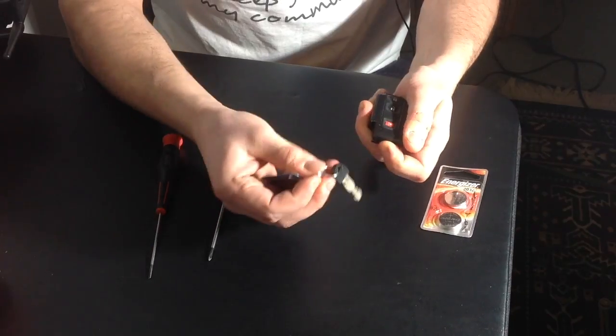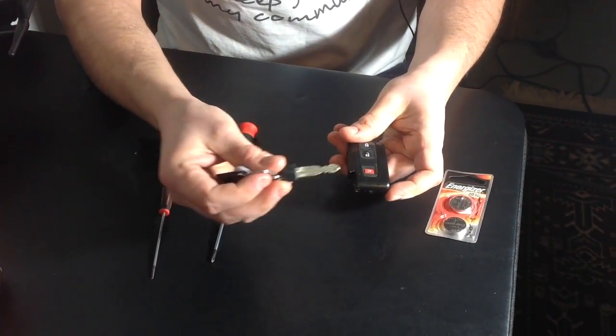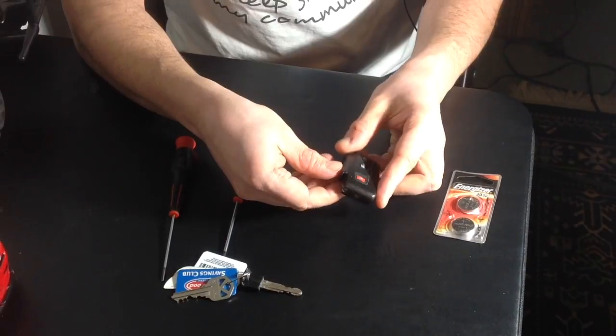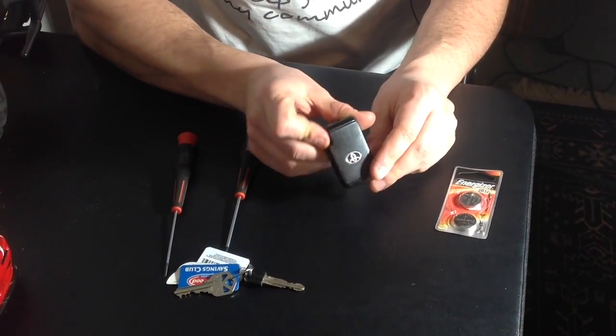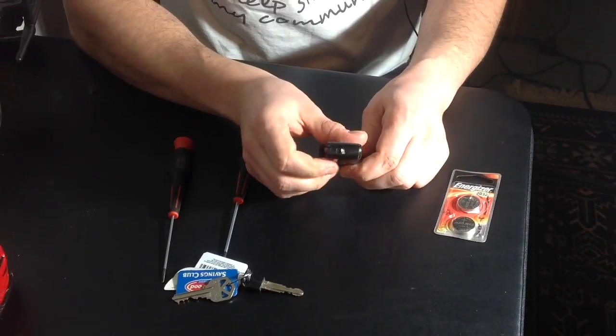You've got to disassemble this top cover from the Toyota key fob. The way this is done is you have to once again slide this little spring on top, which was the key retainer. Slide it in and with your thumb, simply press up this way.